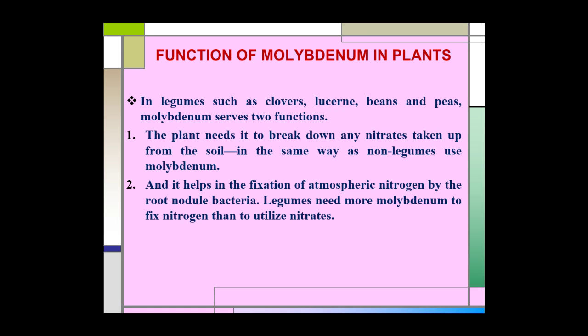In leguminous plants such as clover, beans, and peas, molybdenum plays two important roles. First, the plant needs it to break down nitrates taken up from the soil, in the same way as non-leguminous plants. Second, one major function is that it helps in the fixation of atmospheric nitrogen by root nodule bacteria. Legumes need more molybdenum to fix nitrogen than to utilize nitrates.